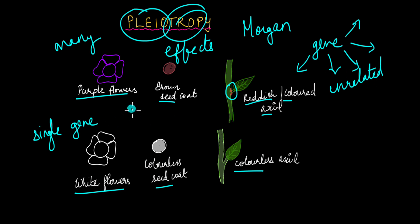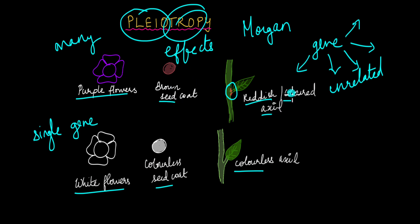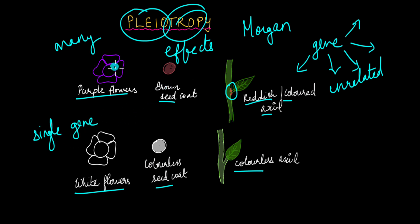If you take a look at these traits here, there is no connection between them. This is the flower colour trait, this is the seed colour trait, and this is the axil colour trait. So these traits are seemingly unrelated but somehow controlled by the expression of a single gene.